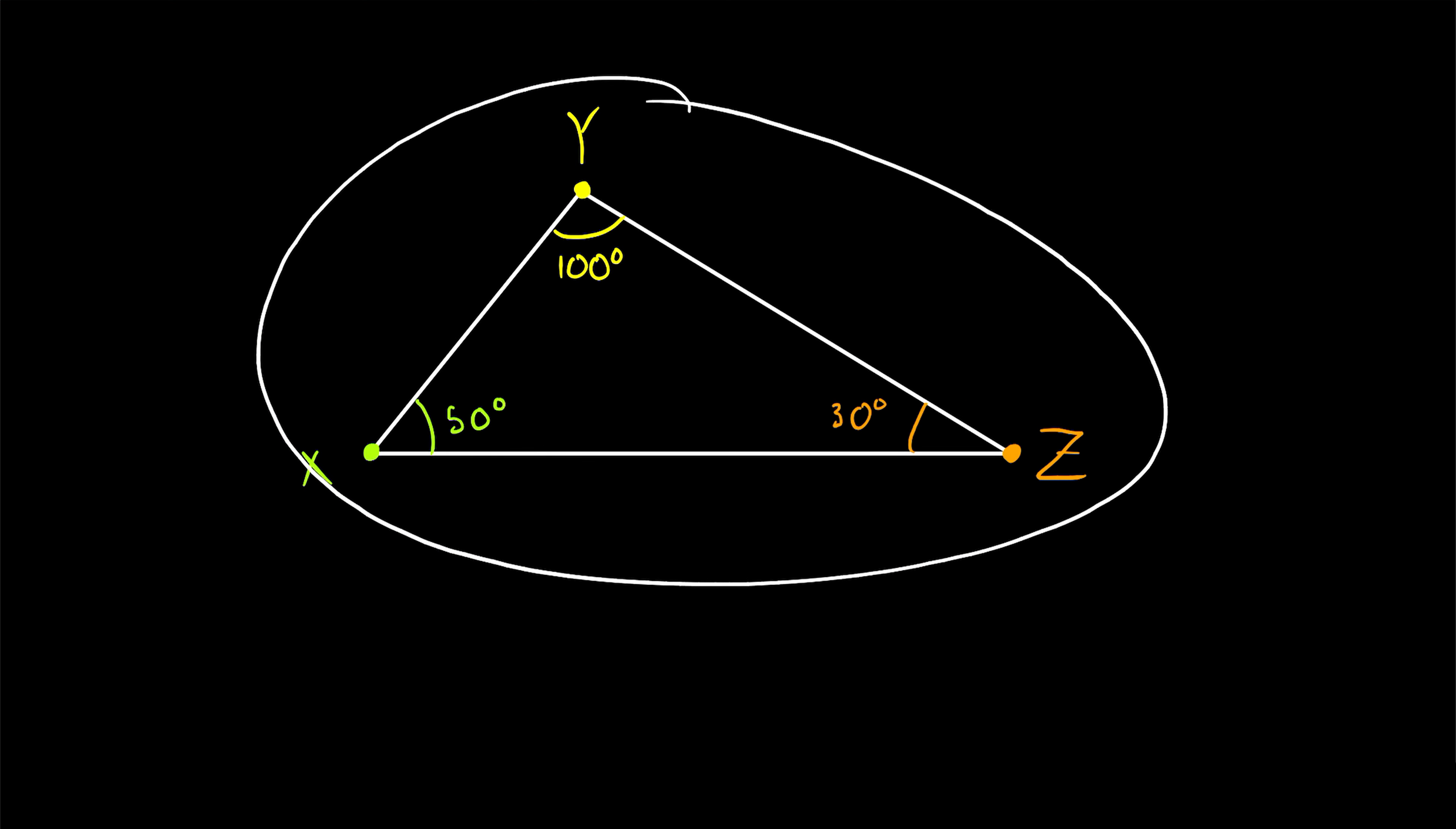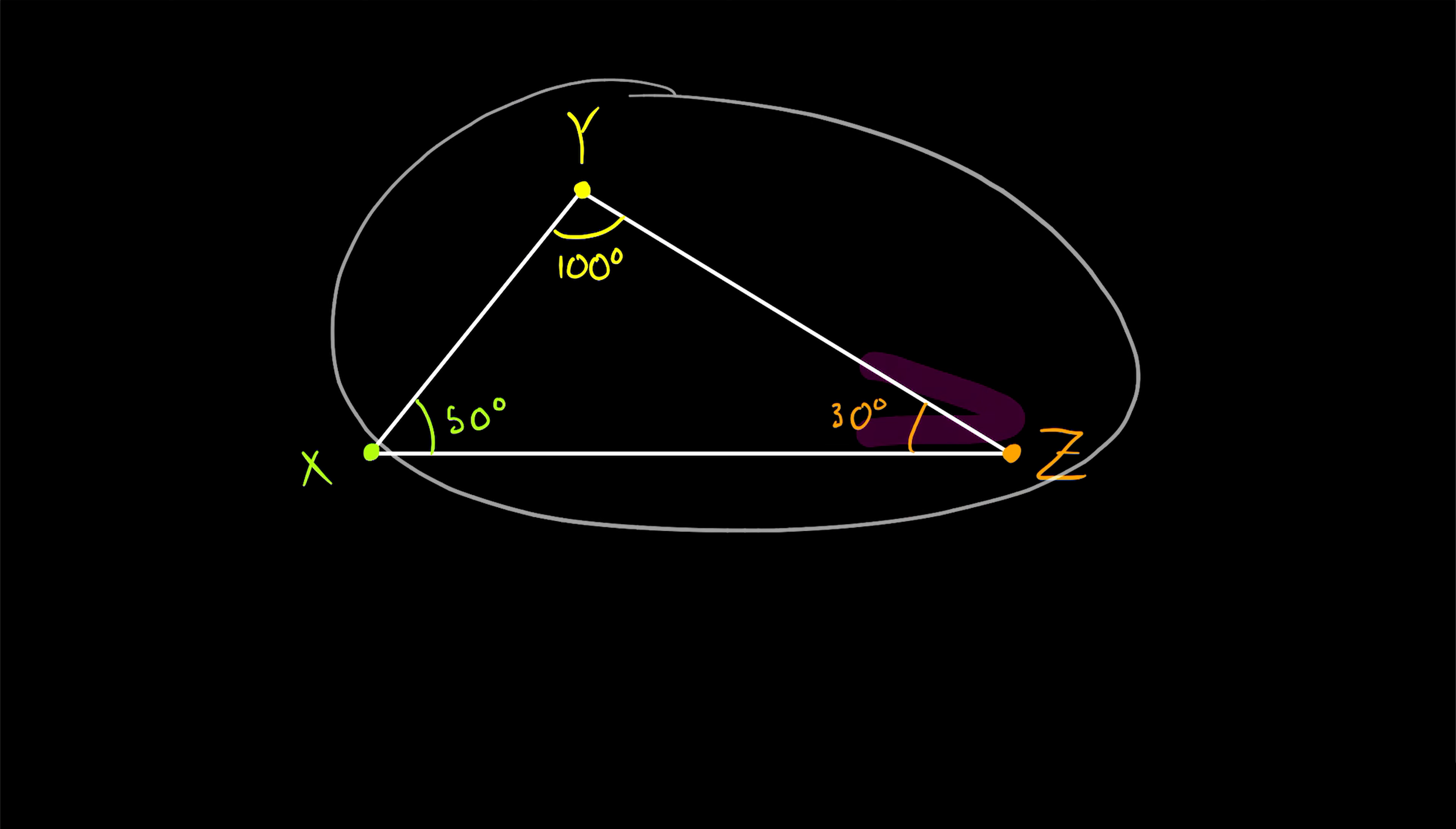Now, here's a practice exercise to try on your own. Come up with the names for the 50 degree, 100 degree, and 30 degree angles in this triangle. Name each angle using the single letter notation and the three letter notation.